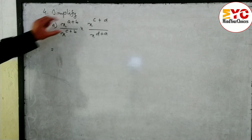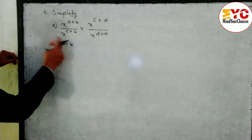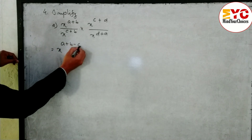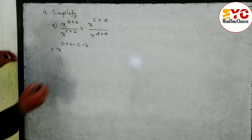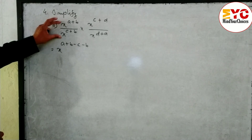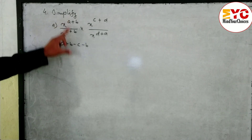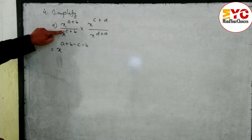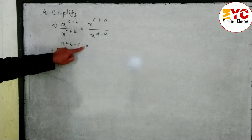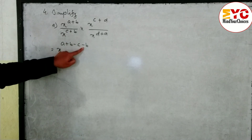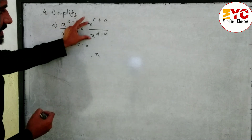So we can write x power (a+b). Here is plus c so we write minus c, and plus b we write minus b. The rule is: when base is the same and in division we subtract the power — if a term is plus, we write minus; if minus, we write plus. Change the sign.